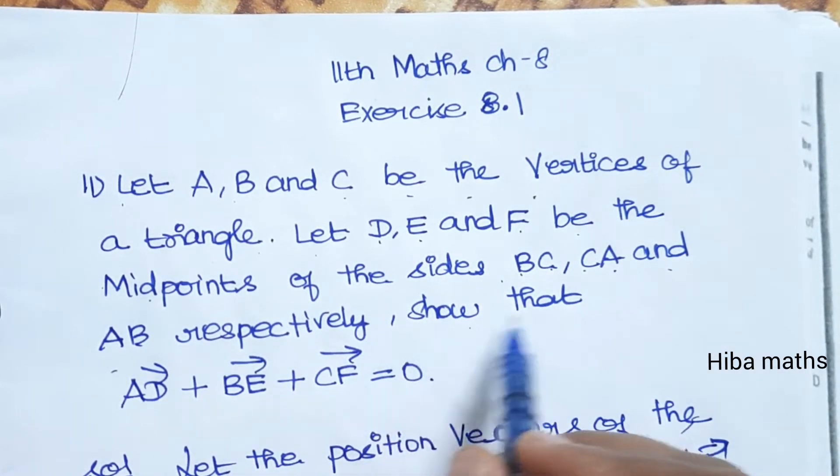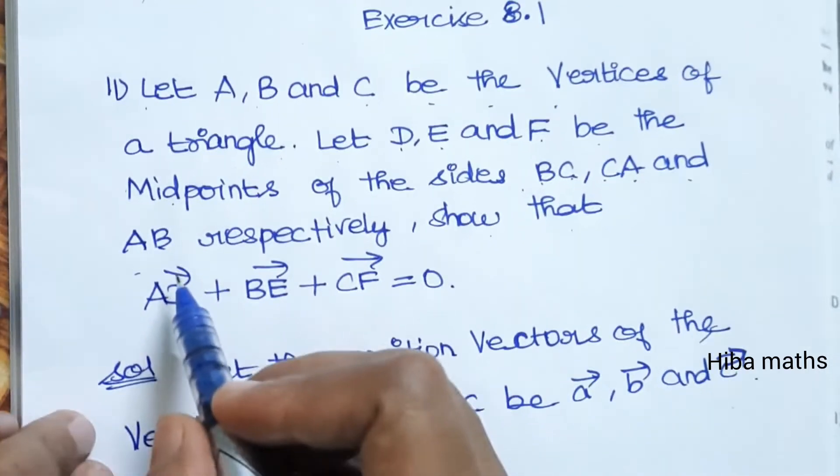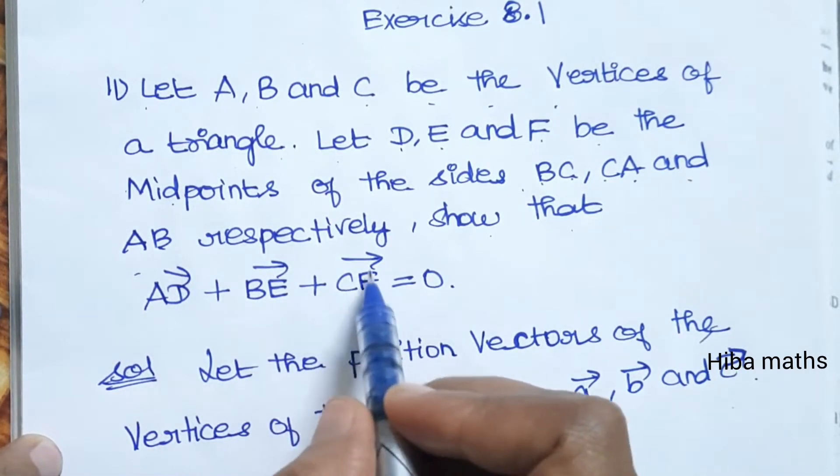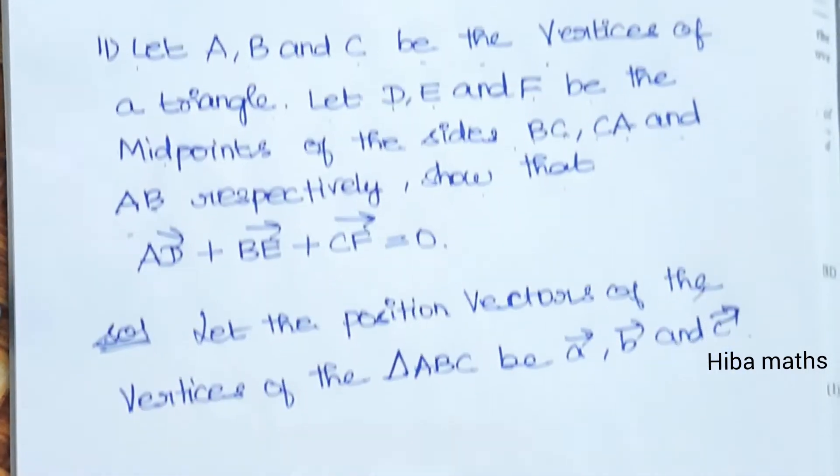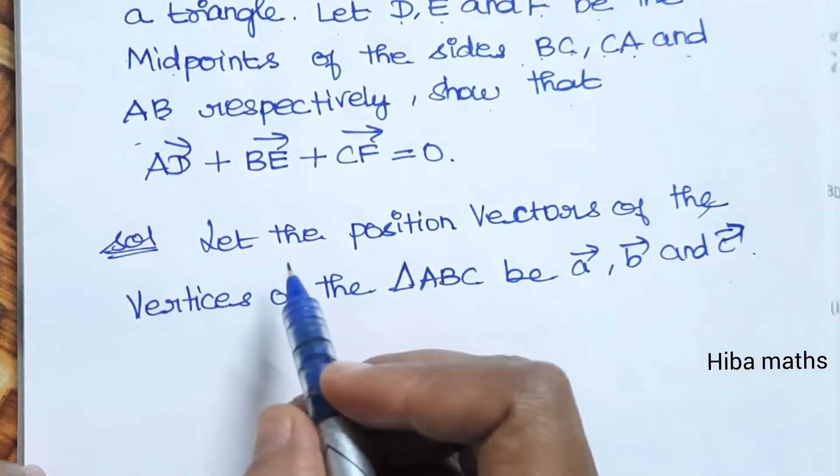And then show that AD vector plus BE vector plus CF vector is equal to 0. First, let's define the position vectors.